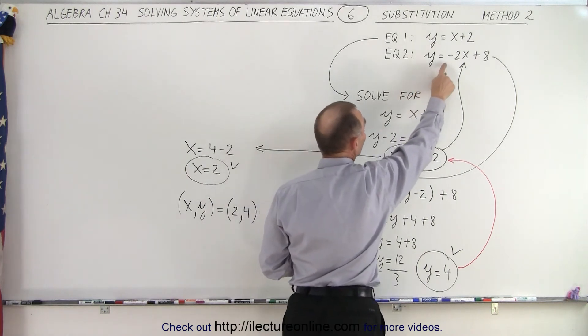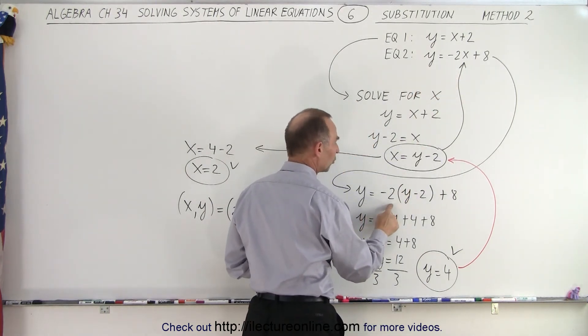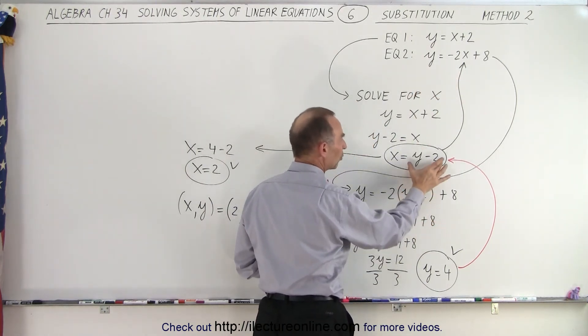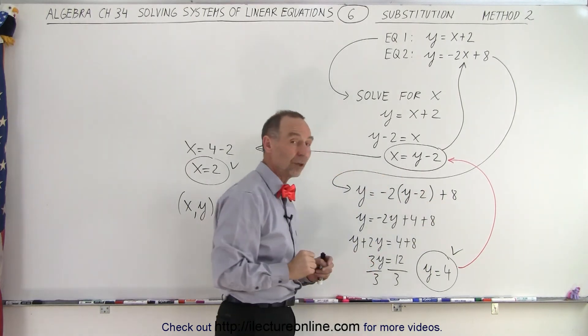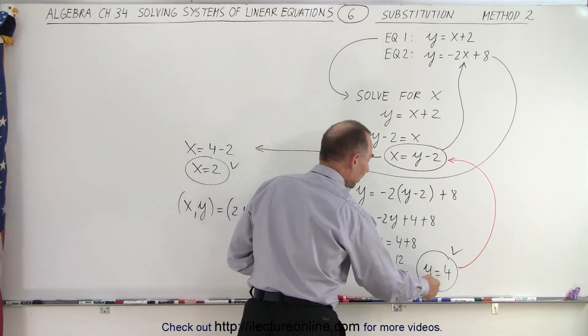So here we have y equals minus 2 times x. But x is y minus 2, so we substitute that. Then we solve that equation for y.